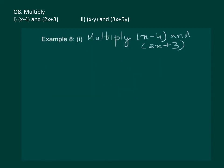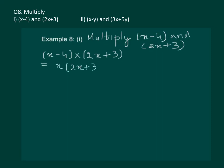Let us start with example 8, part 1. It says multiply (x minus 4) and (2x plus 3). We can see we have to multiply two binomials. Let us start distributing the first bracket. We get x multiplied by (2x plus 3), minus 4 multiplied by (2x plus 3). Note that the minus sign comes from the first bracket.